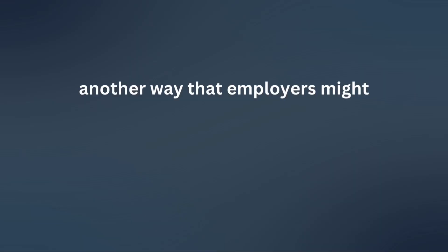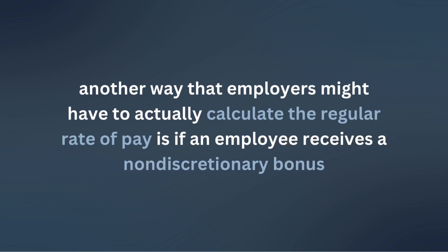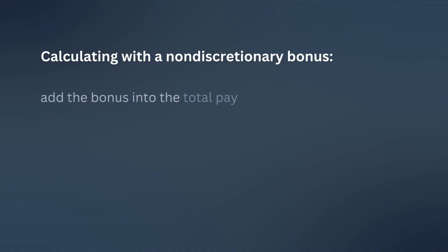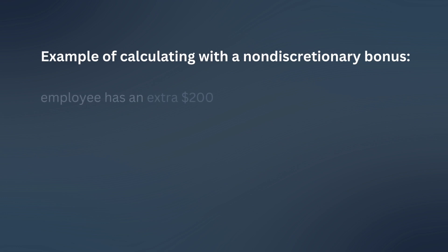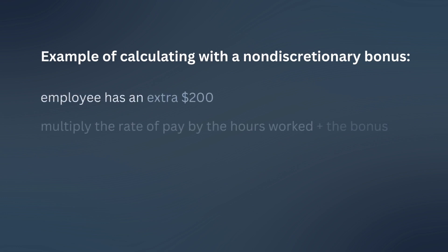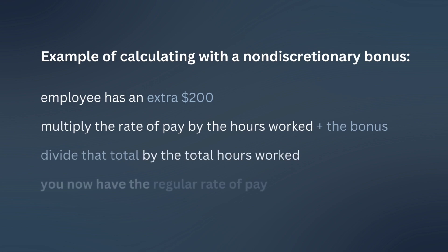Another way that employers may have to calculate the regular rate of pay is if an employee receives a non-discretionary bonus. A non-discretionary bonus is one where there's a set calculation, it is tied to the employee's work or performance, and it is anticipated by the employee. So if you have a non-discretionary bonus, you have to add that into the total pay before you divide by the number of hours to get the regular rate of pay. For example, if an employee has an extra $200, you multiply the rate of pay times the hours worked plus the non-discretionary bonus, divide that total by the total hours worked, and that is your regular rate of pay.